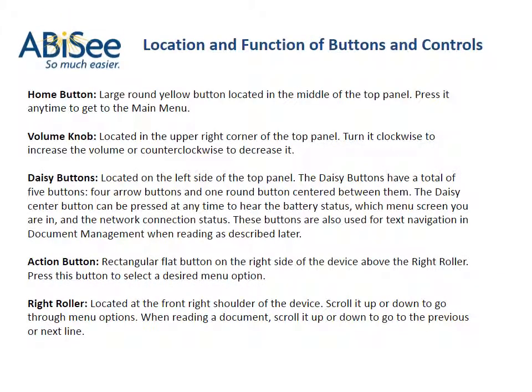Location and function of buttons and controls. Home button: large round yellow button located in the middle of the top panel — press it any time to get to the main menu. Volume knob: located in the upper right corner of the top panel — turn it clockwise to increase the volume or counterclockwise to decrease it. Daisy buttons: located on the left side of the top panel.